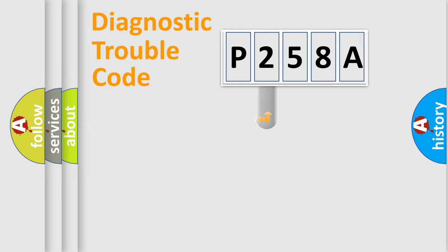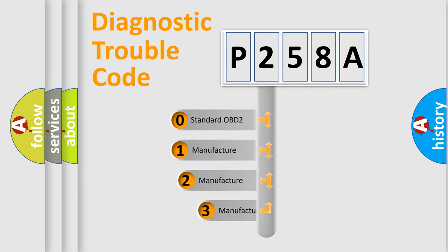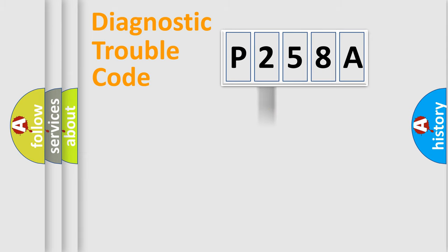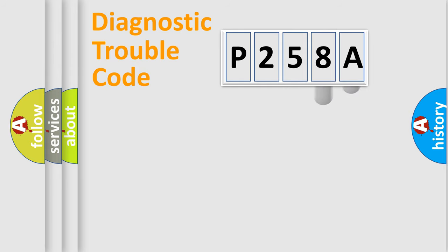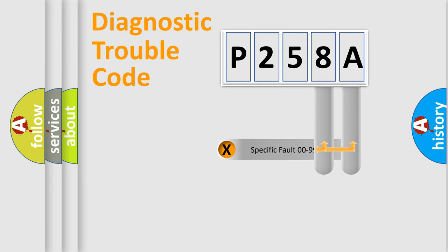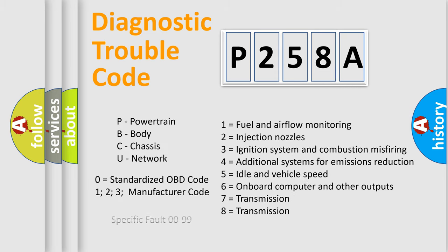This distribution is defined in the first character of the code. If the second character is expressed as zero, it is a standardized error. In the case of numbers 1, 2, or 3, it is a manufacturer-specific error. The third character specifies a subset of errors. This distribution is valid only for the standardized DTC code, and only the last two characters define the specific fault of the group.